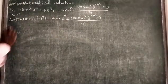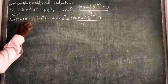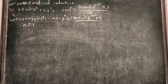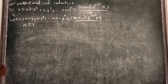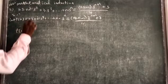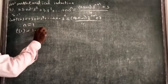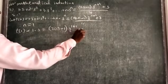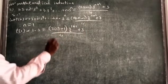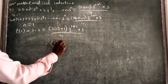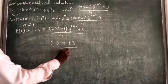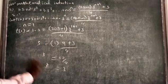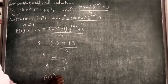First, substitute n equal to 1. When n equals 1, it represents the first term, so we check P of 1. The first term is 1 into 3, which equals 2 into 1 minus 1, times 3 to the power 1 plus 1, plus 3 by 4. This gives us 2 into minus 1, so 1 into 3 squared is 9, plus 3 by 4, minus 12 by 4, which equals 3. Since 1 into 3 equals 3, both sides are equal, so P of 1 is true.